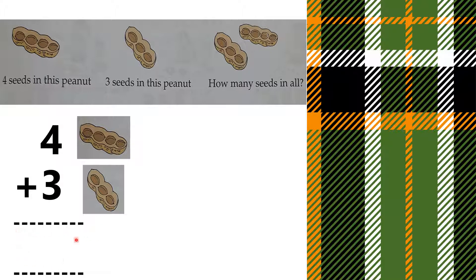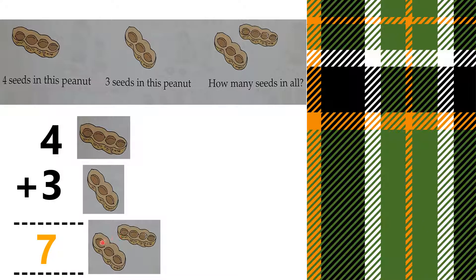Now we will find the answer. Let us add four and three. We will count the number of seeds all together — from this peanut and this peanut, all together. One, two, three, four, five, six, seven. Four plus three is equal to seven. How many seeds in all? Seven seeds in all.